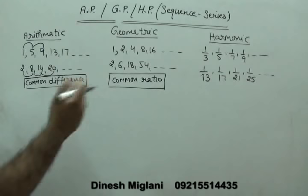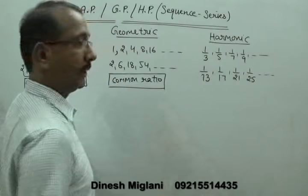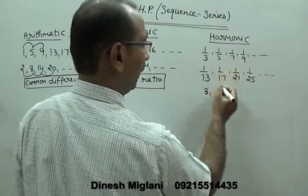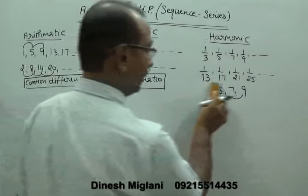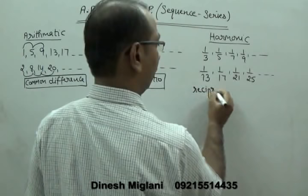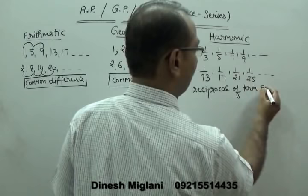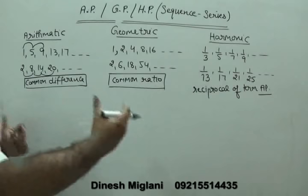The third series is harmonic progression. Harmonic means: if I take the reciprocal of the terms — for 1/3, 1/5, 1/7, 1/9 — reversing gives 3, 5, 7, 9, which is in AP. So, any series is said to be harmonic progression where the reciprocals of the terms are in AP. I hope the idea is clear.